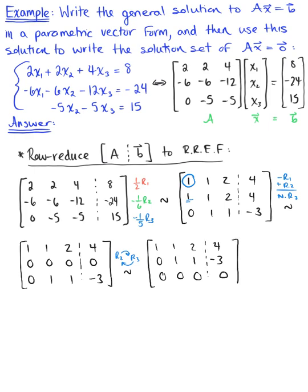We have echelon form! In attaining echelon form, we know that our system is consistent and a solution certainly exists. Also notice our third pivot position is 0, indicating that x3 is a free variable. The system is still consistent because both sides of our third equation are equal to 0 — no contradiction.